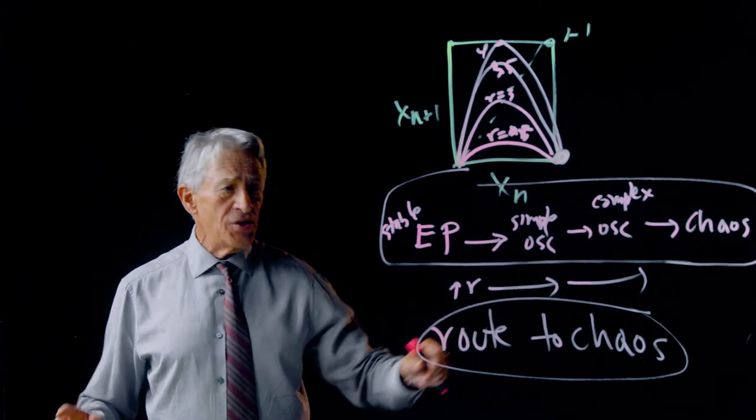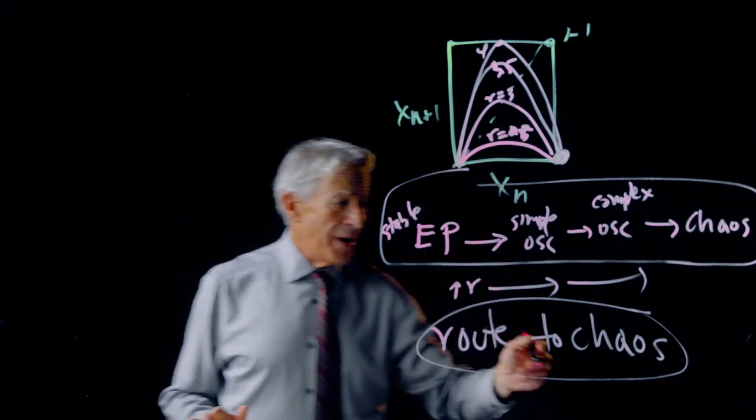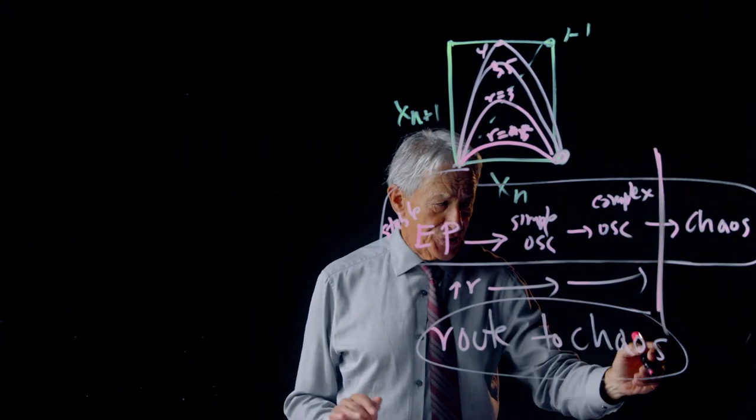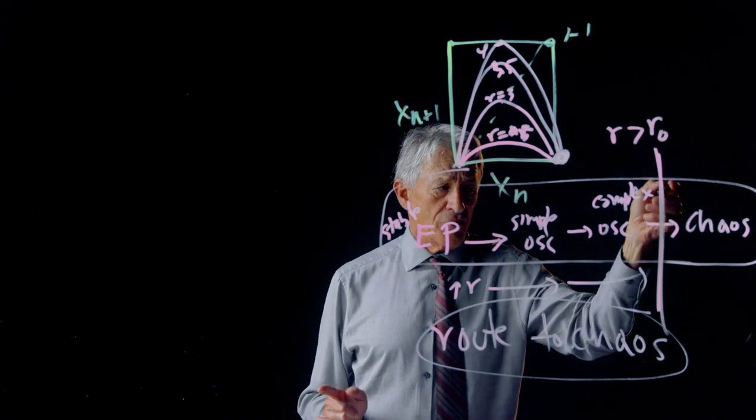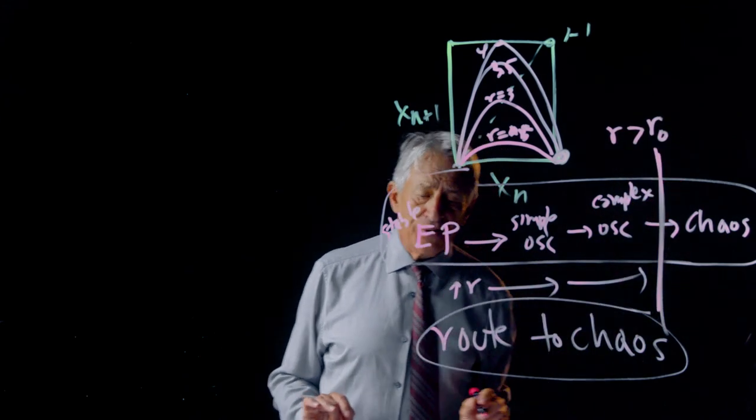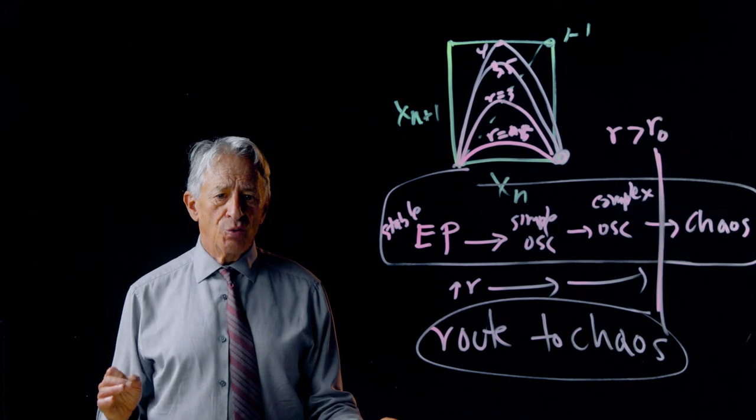The waystations get more complex until a bifurcation is reached. And for r greater than some r0, the result is true chaos.